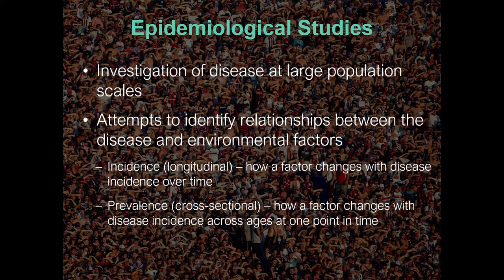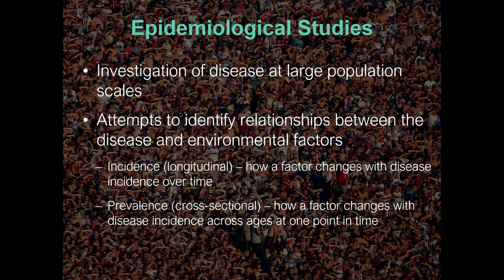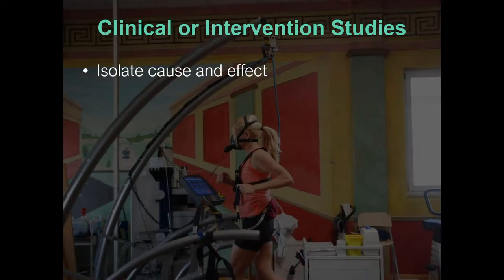It's important to emphasize that the answers from epidemiological studies are relationships — they are correlative, and correlation does not equal causation. If there's a relationship between more sun exposure and higher skin cancer incidence, you'd develop a hypothesis. To isolate cause and effect, you'd need a clinical or intervention study — though you'd never get ethical clearance to intentionally expose subjects to harm.